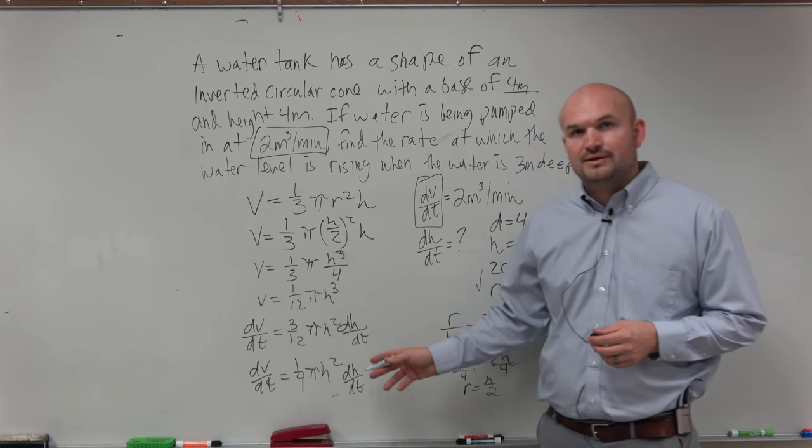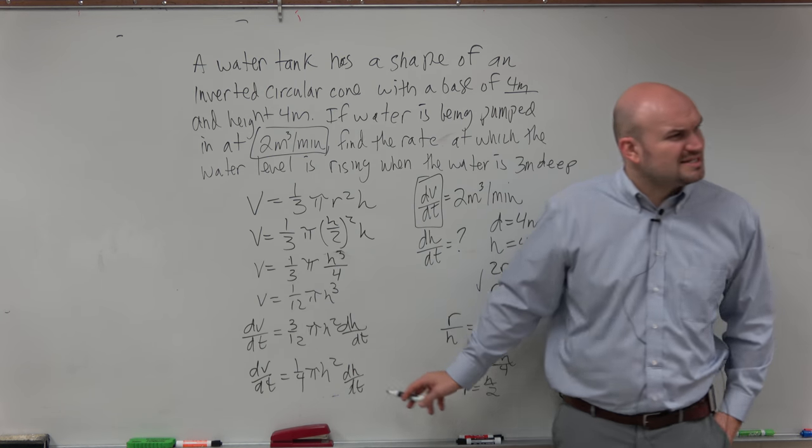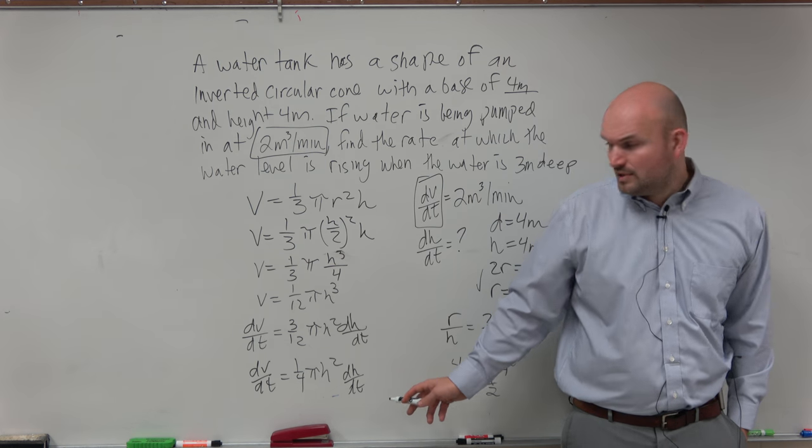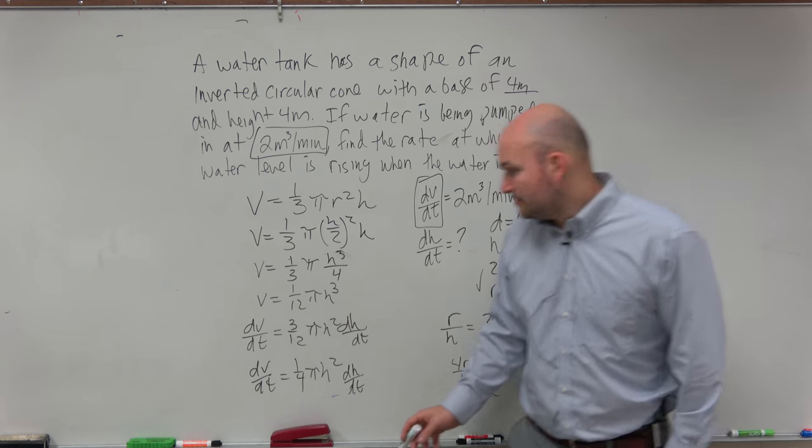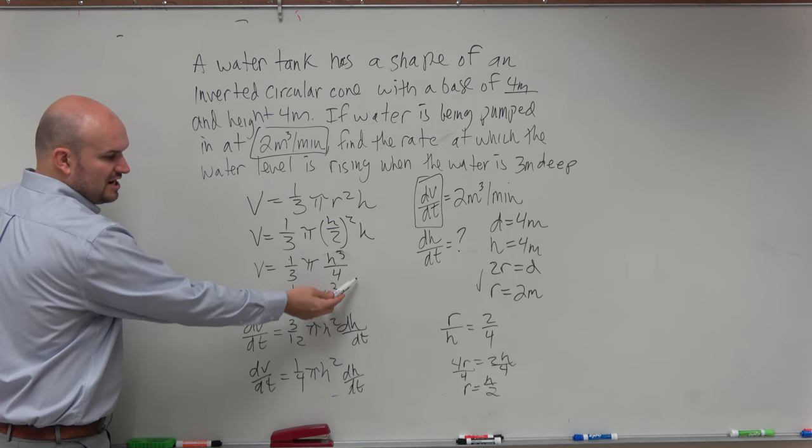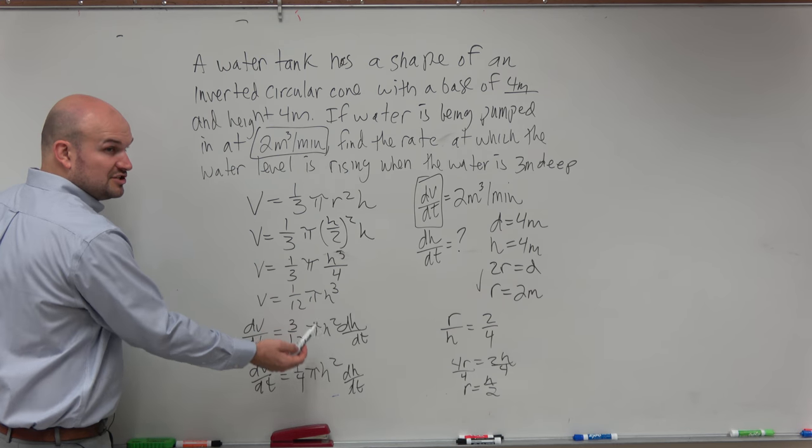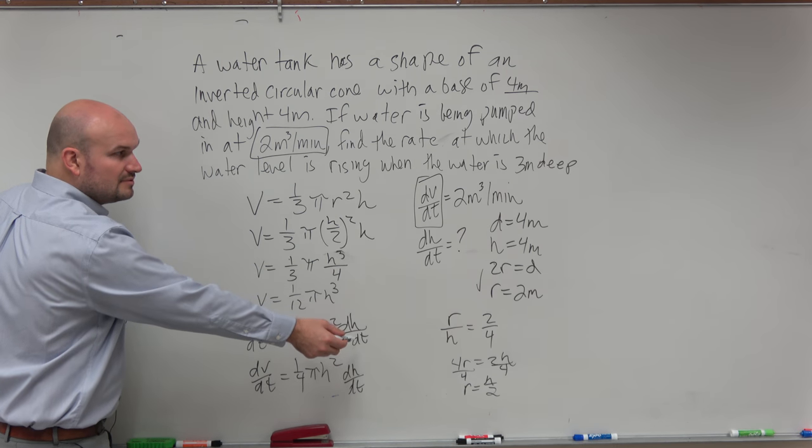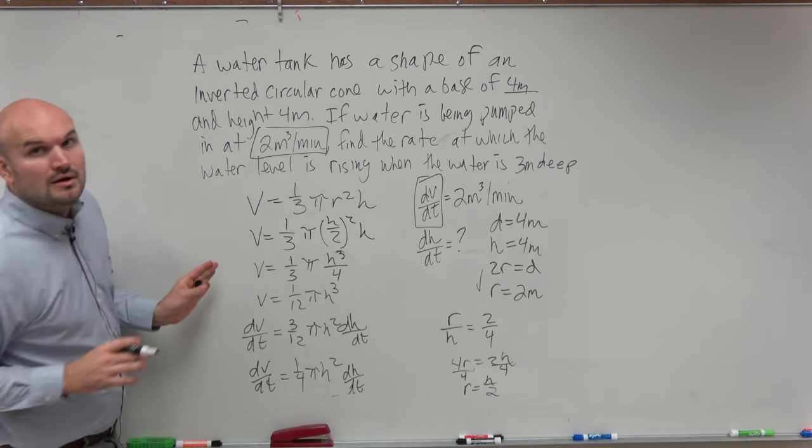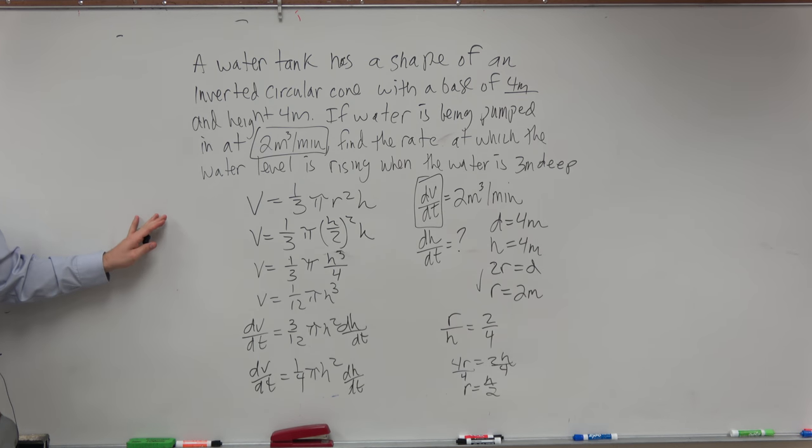Does everybody see how I did that, or what I did? Anybody have any questions on what I did, or how I did? Where did I get the 3? Power rule. Brought the 3 down. And then subtracted 1, and that's how I got the squared. But just remember, you've got to do dh/dt, which I inevitably forgot right there.